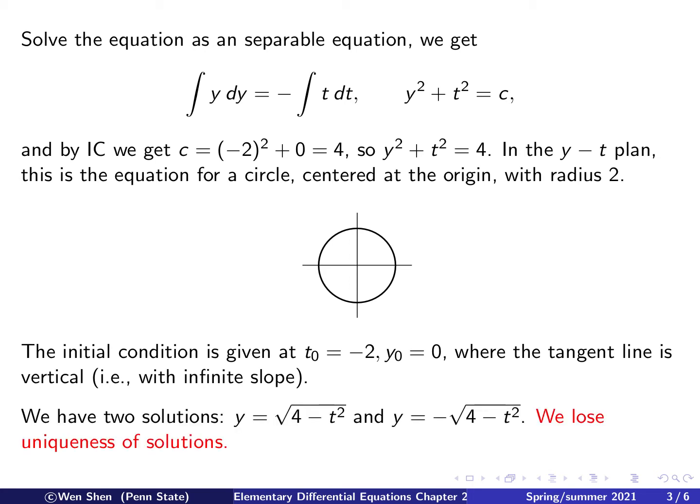Now, choosing this point as the initial condition, we would have two possibilities. One would be the solution starts to move upward and complete the upper half of the circle. Another way is the solution could move downward and complete the lower semicircle.